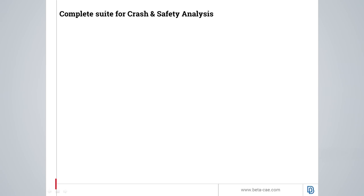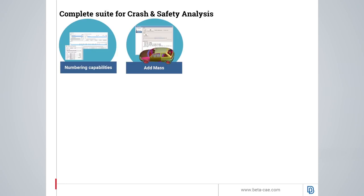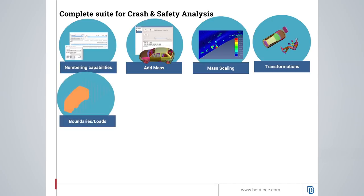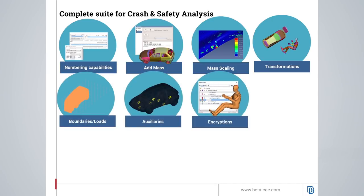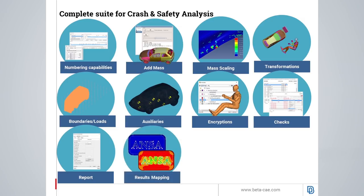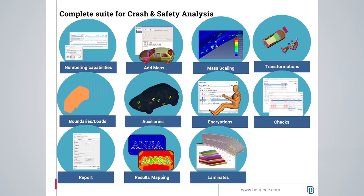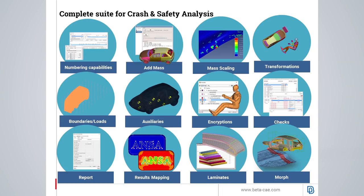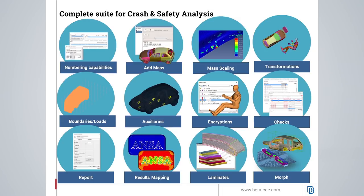ANZA offers a complete suite for crash and safety analysis: numbering capabilities, added mass calculations, mass scaling for crash solvers, transformation keywords handling, boundary conditions and loads, auxiliary items such as time history nodes, handling of encryptions, a complete package of templatized checks, report tools, results mapping for passing results from another analysis as initial conditions, laminate tool for composite materials, and morphing capabilities. This complete suite for the crash and safety analyst is fully scriptable using the Python language.